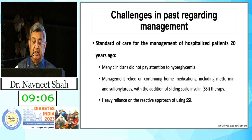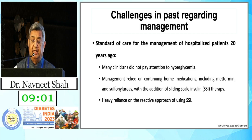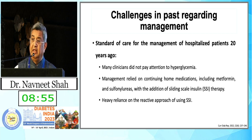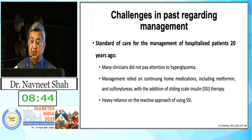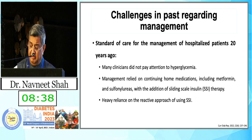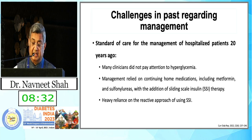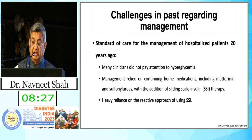There is a lot of variability seen across different regions of the world. In the past, many doctors did not fully understand the magnitude and severity of inpatient hyperglycemia. Management was casual, relying upon continuing home medicines including metformin and sulfonylurea, and there was heavy reliance on sliding scale insulin with a reactive approach to blood sugar without thinking about consequences.